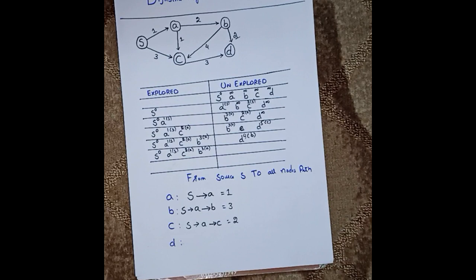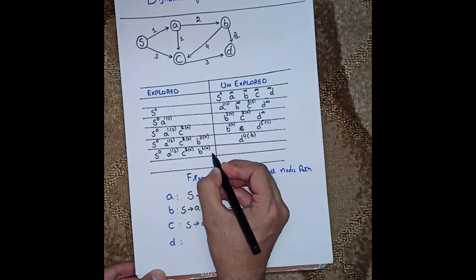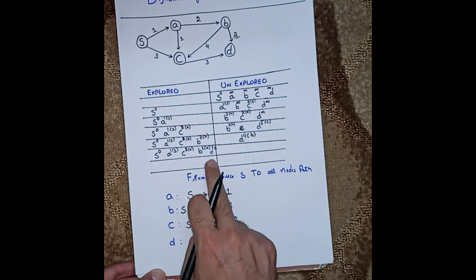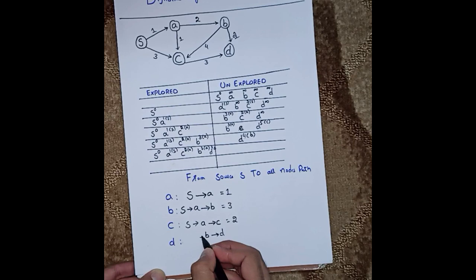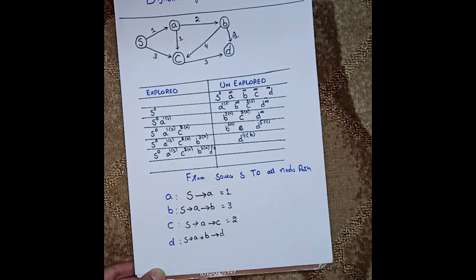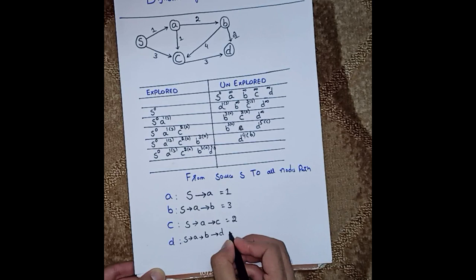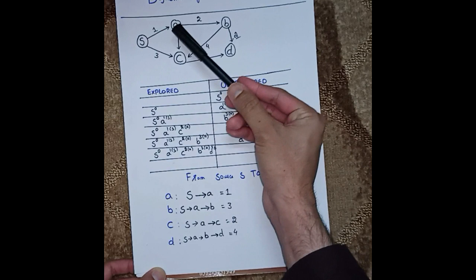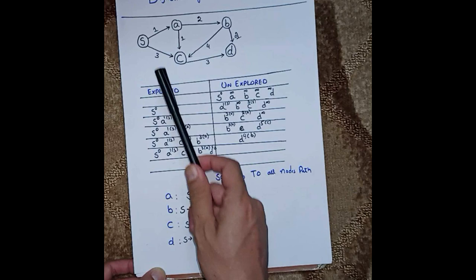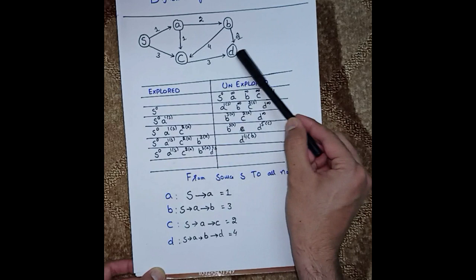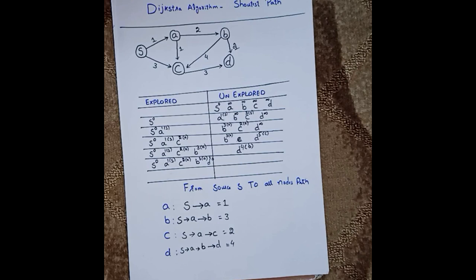To reach D: D's parent is B. B's parent is A, and A's parent is S. So the shortest path is S → A → B → D with overall distance 4. We can verify: 1 plus 2 plus 1 equals 4. We could follow S → A → C → D but that gives 1 plus 1 plus 3 equals 5, which is longer. So S → A → B → D is the shortest path with distance 4.